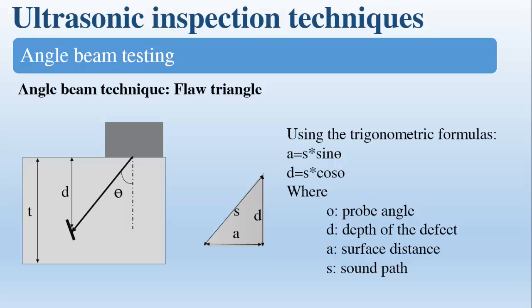And if we use the trigonometric formulas, we get the distance a, which is the surface distance, equal to s, which is the sound path, multiplied by sine of the angle theta. And d, which is the depth of the flaw, is equal to s multiplied by cosine of the probe angle theta.